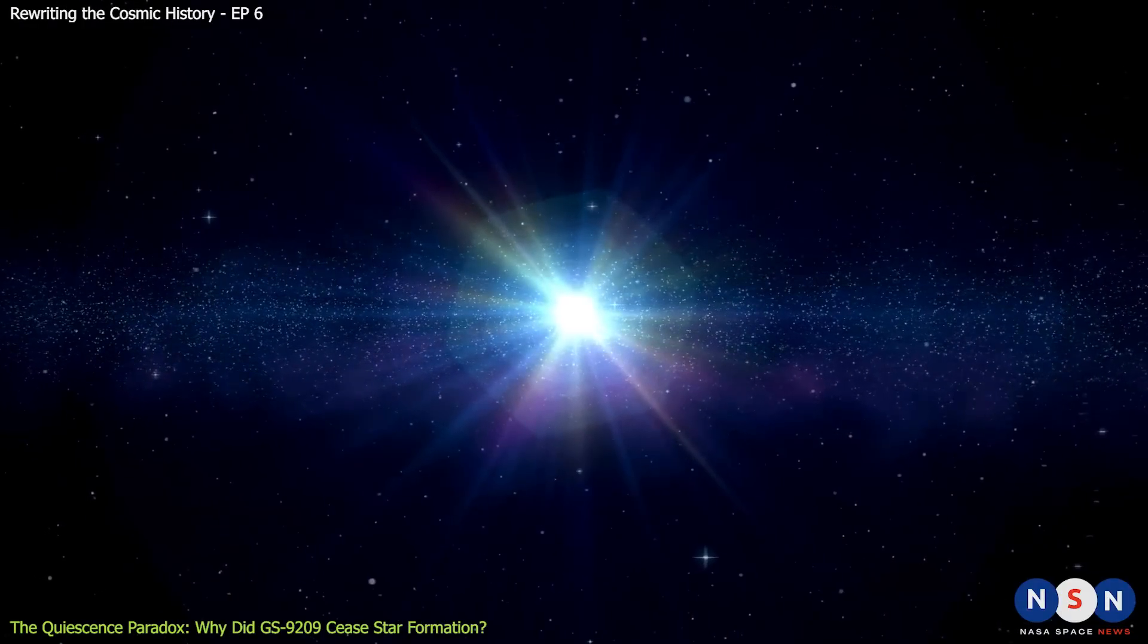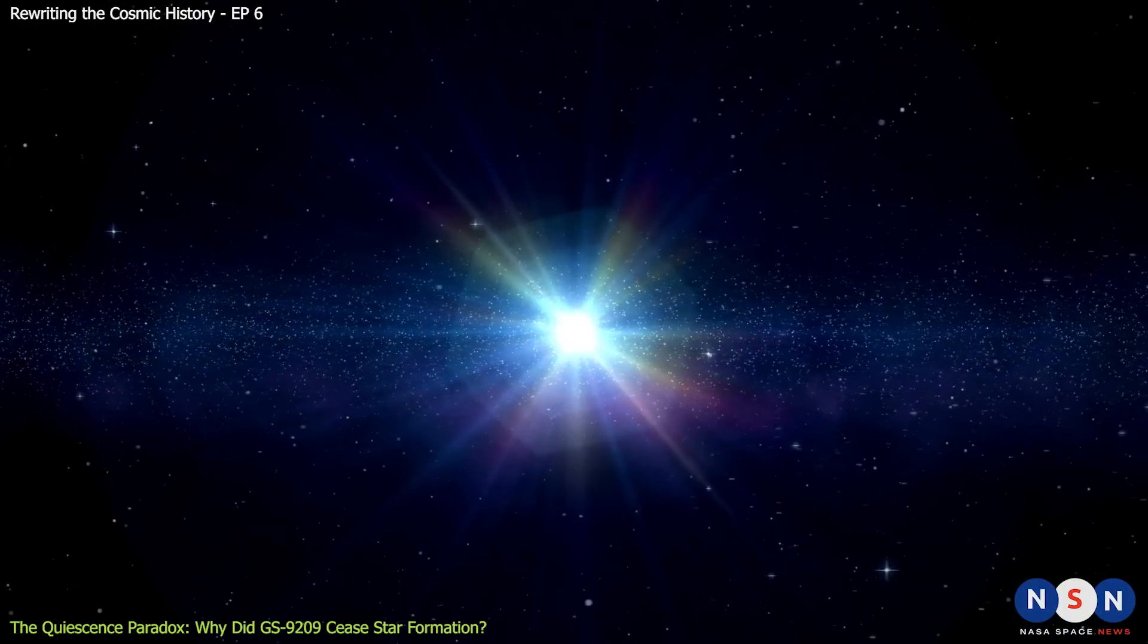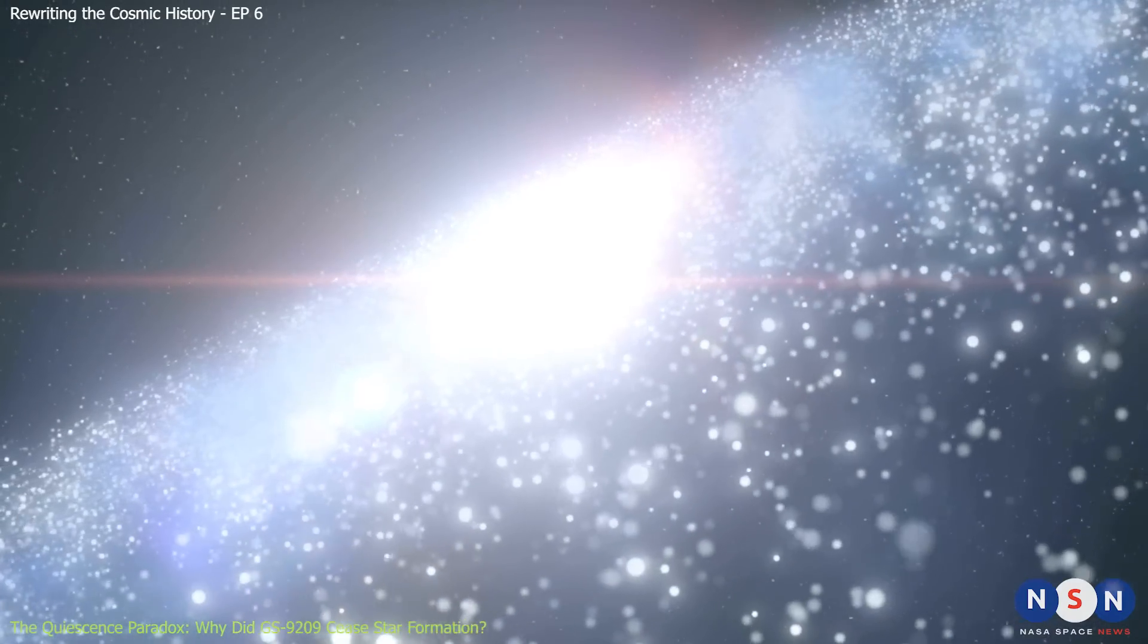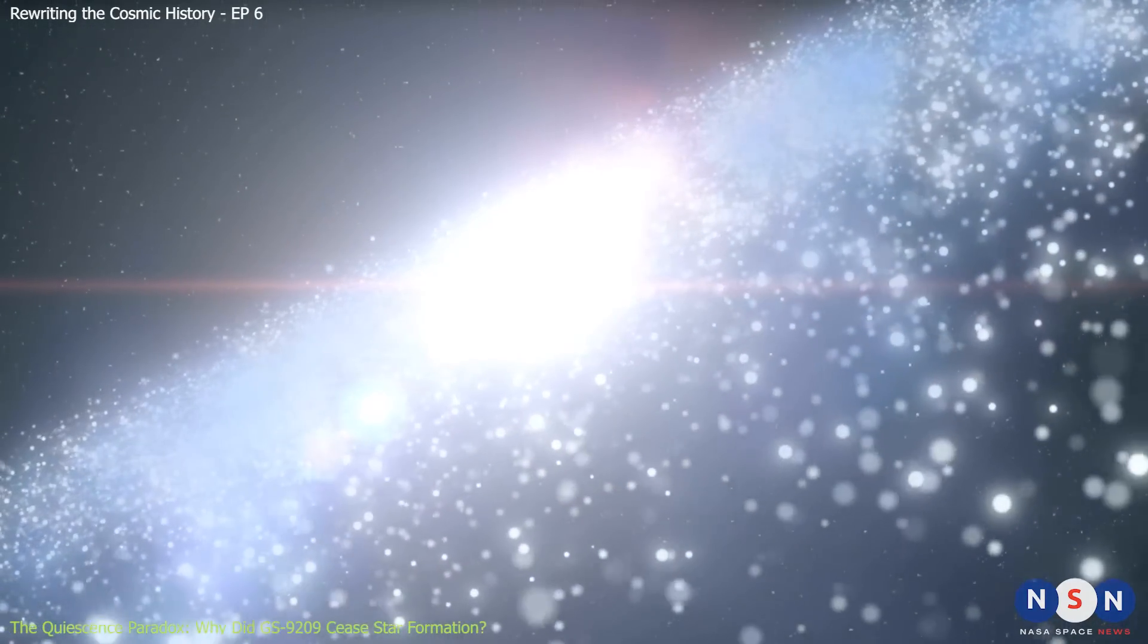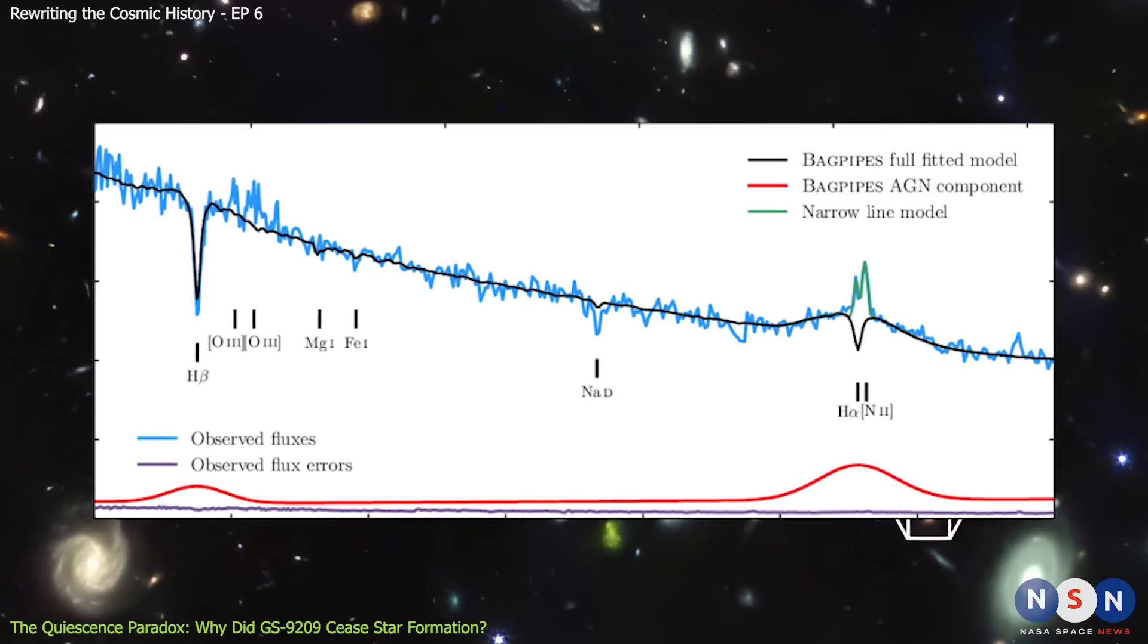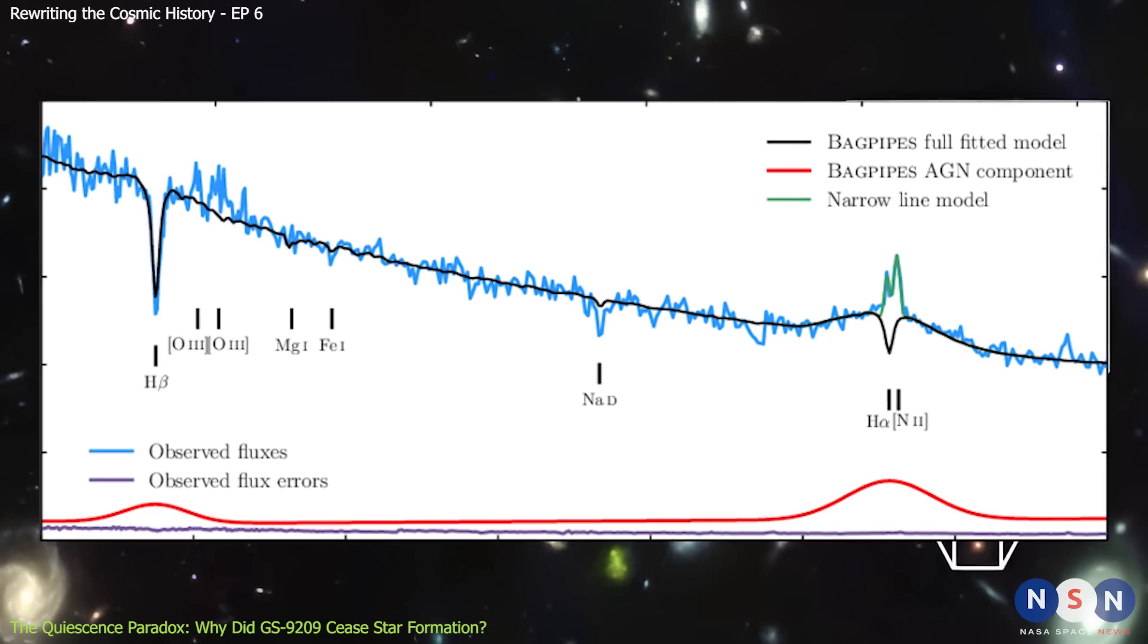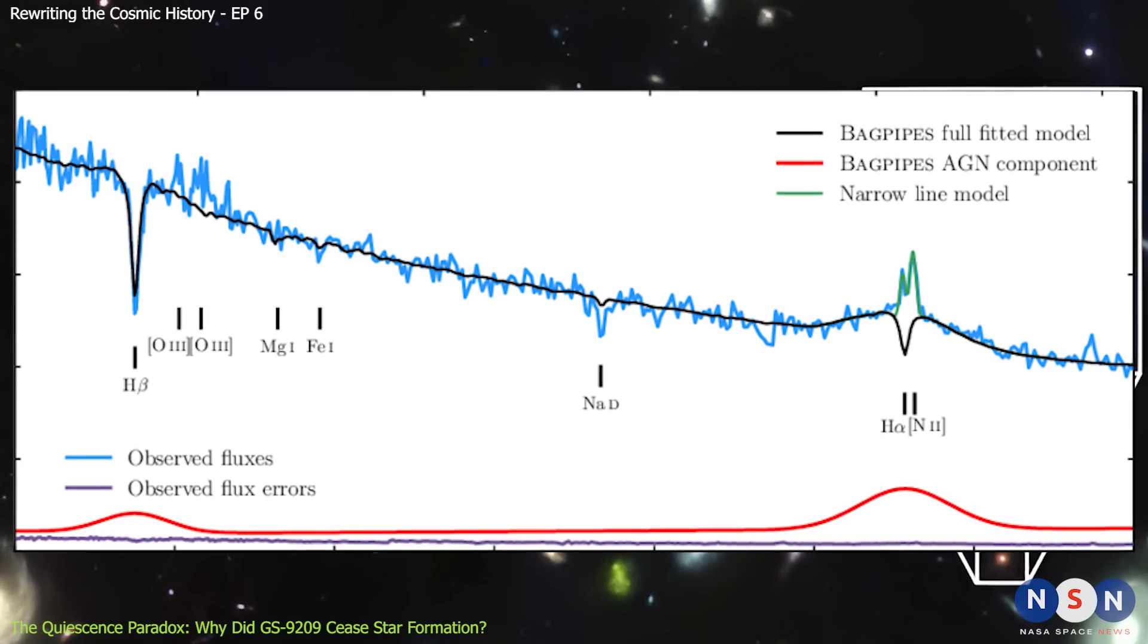But how did this black hole grow so large in such a short time? And how did it affect its surroundings? These are some of the questions that astronomers are trying to answer by studying GS 9209's spectrum and morphology.